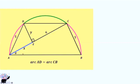We can label this angle to be theta, and this angle will also be theta, because they are alternate angles. This angle will always be 90 degrees, because it faces the diameter. This angle can be beta, and this angle too can be beta.